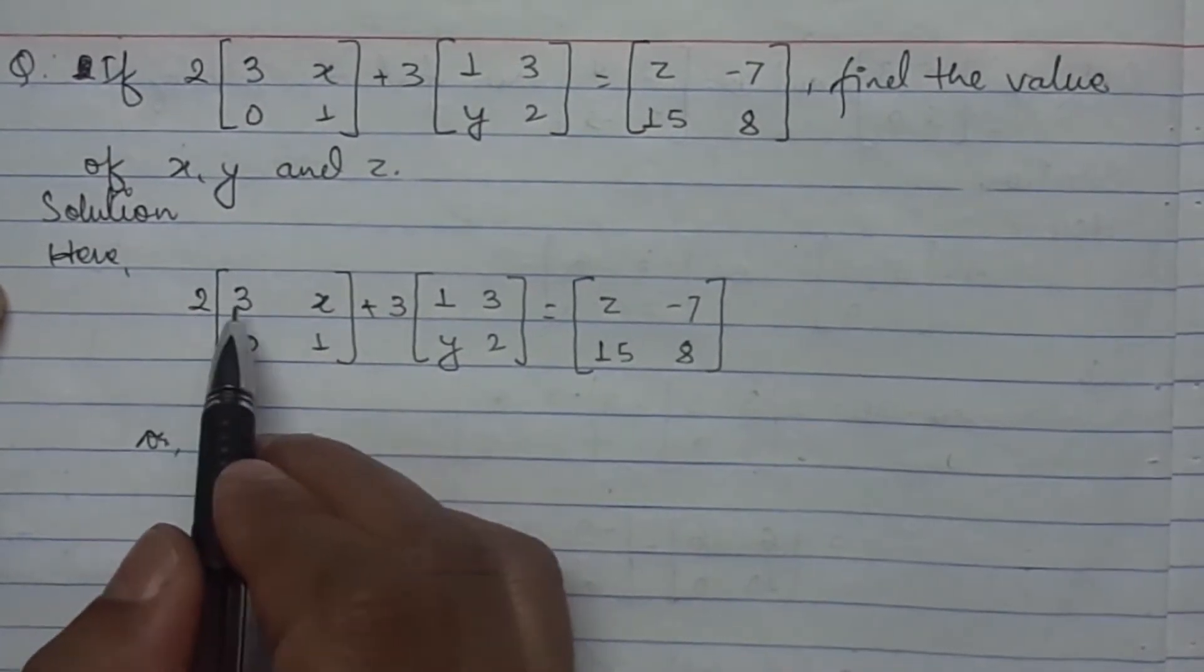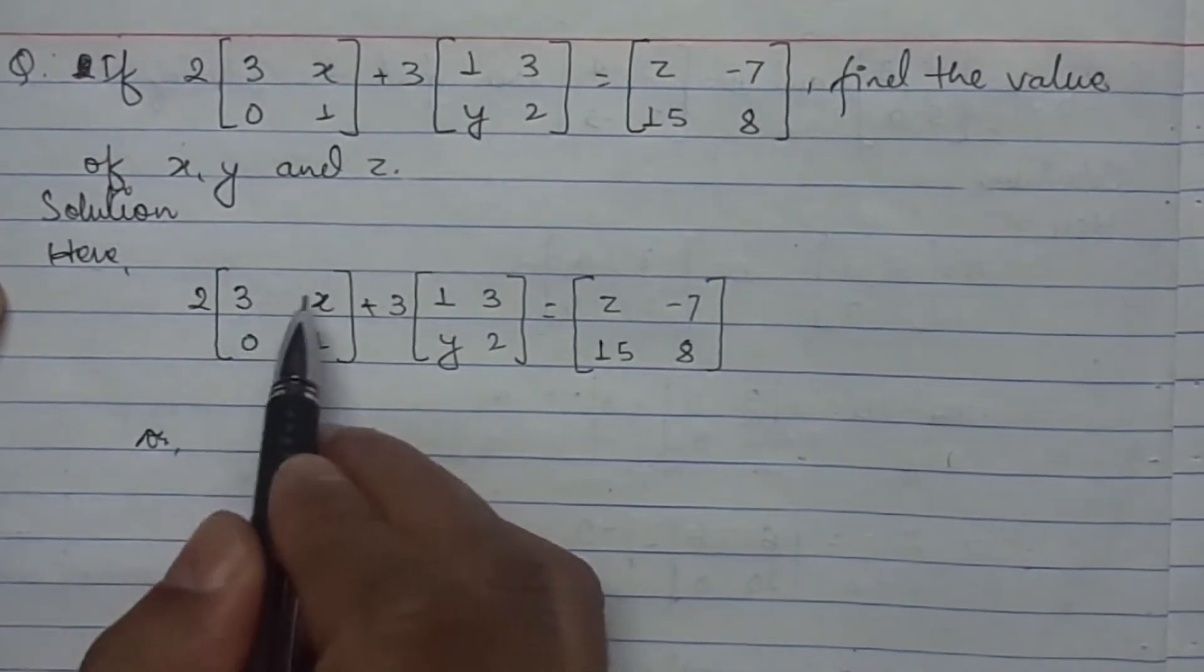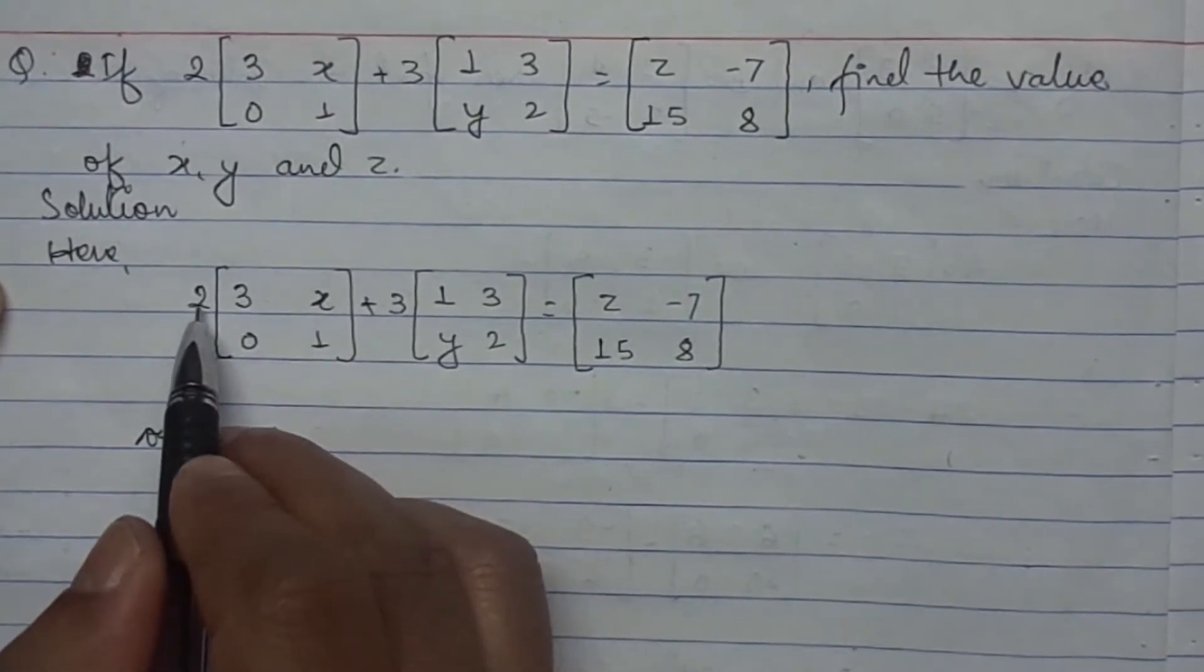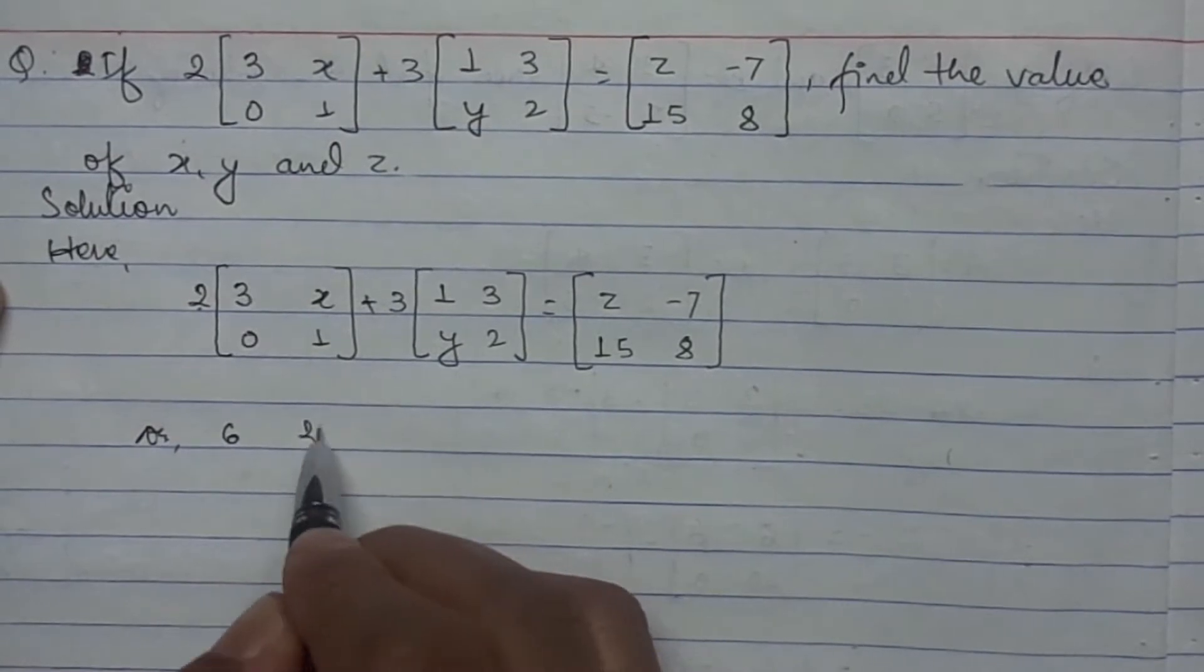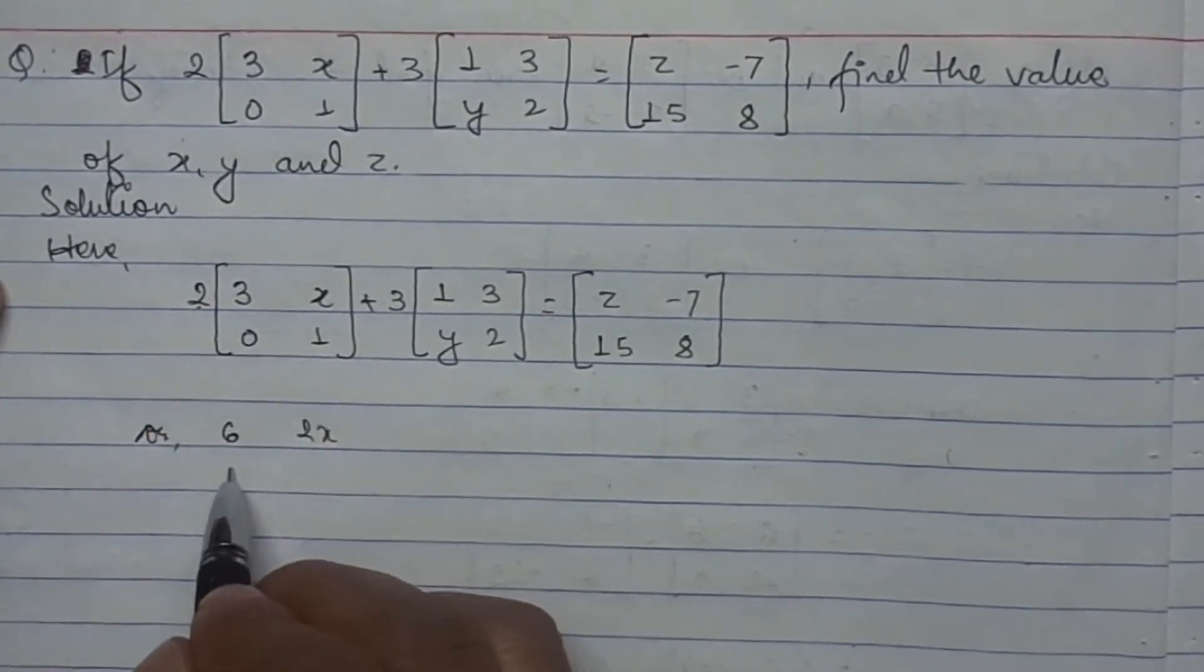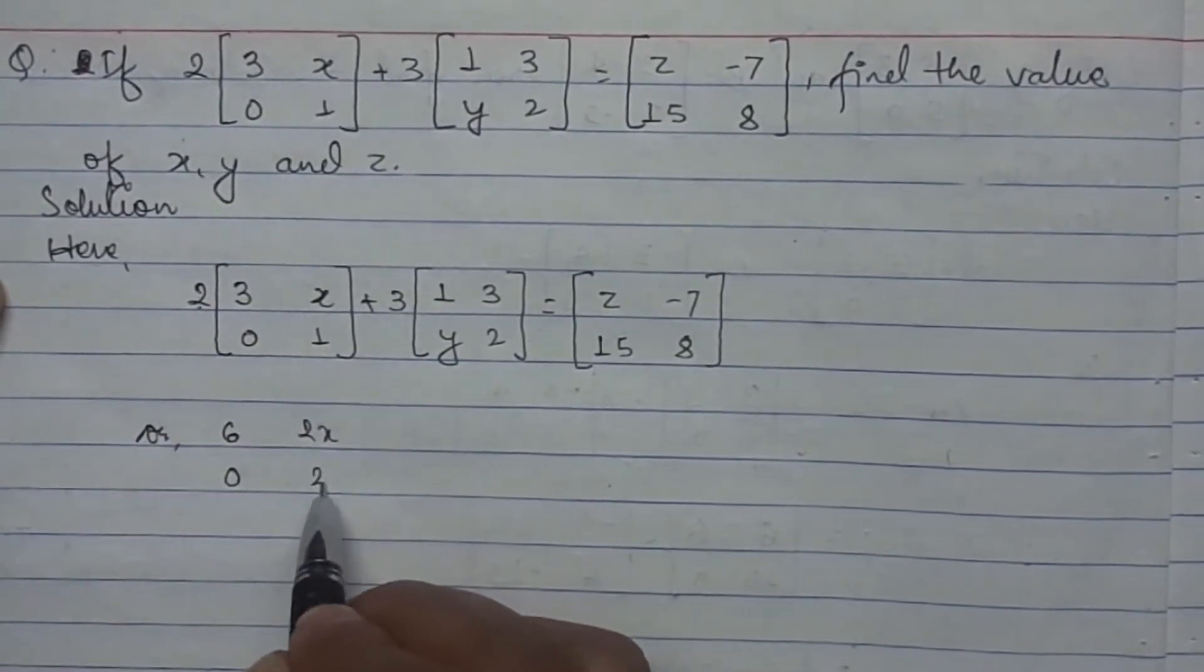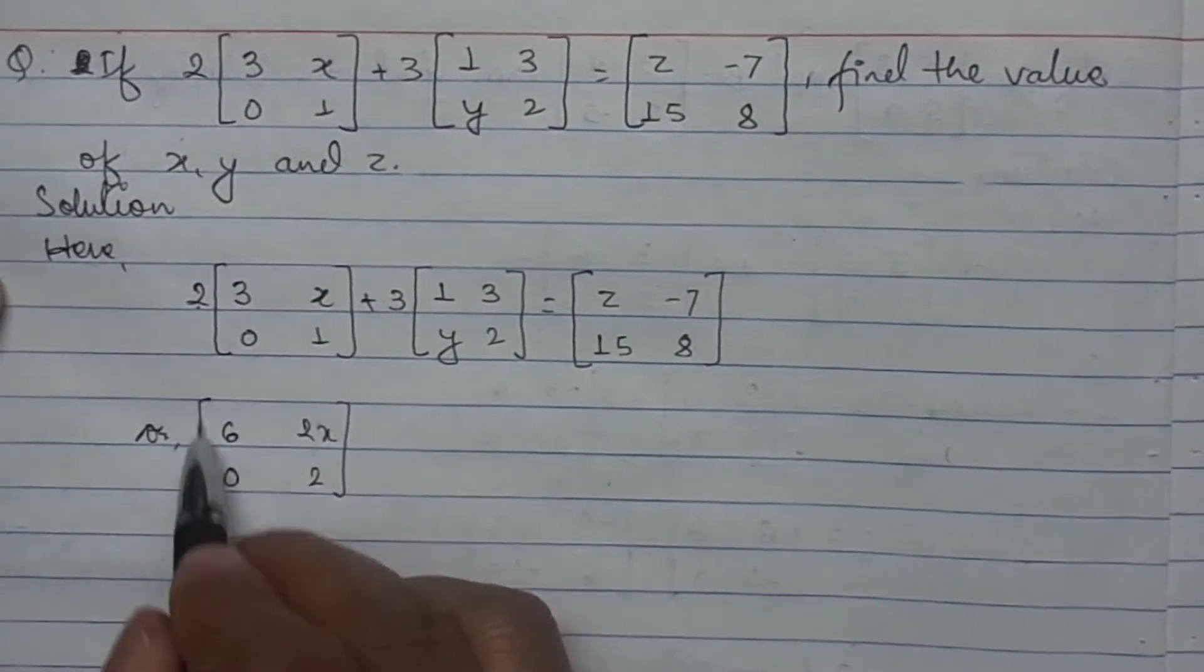Now we need to multiply all the elements of this matrix by 2. 2 into 3 is 6, 2 into x is 2x, 2 into 0 is 0, 2 into 1 is 2.